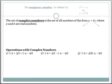The set of complex numbers is the set of all numbers of the form a plus bi, where a and b are real numbers. So in this form, your a will be the real part of your complex number, and the bi will be the imaginary part of the complex number.